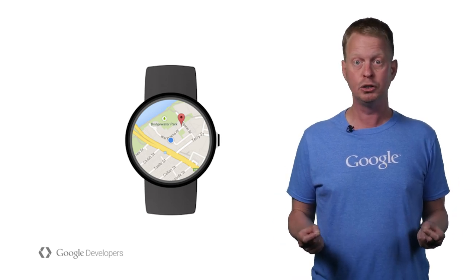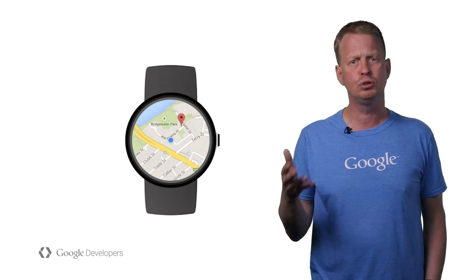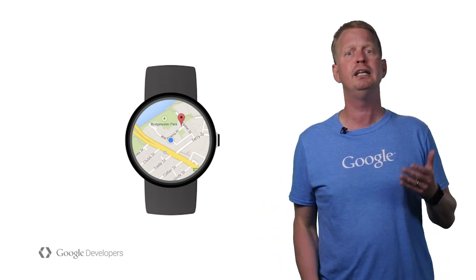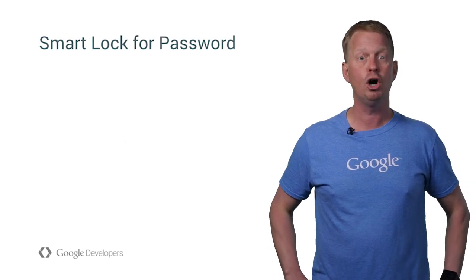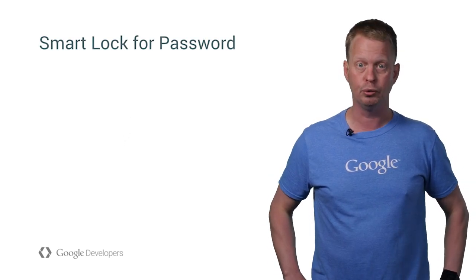The Maps API is now natively supported on Android Wear devices. It's now possible to present a fully interactive map on a wearable device that includes scrolling and zooming. You can also show street view, display the user's current position, use light mode maps, and much more.